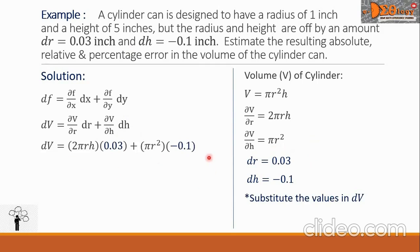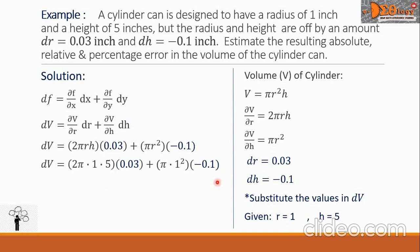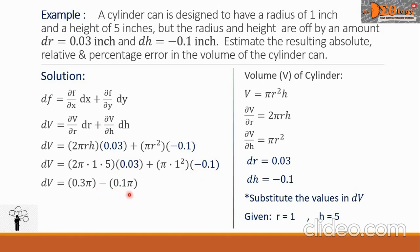Evaluating: the partial derivative of V with respect to r is 2πrh, and with respect to h is πr². Substituting r equals 1, h equals 5, dr equals 0.03, and dh equals negative 0.1: we get 2π times 1 times 5 times 0.03, which gives 0.3π, minus π times 1 squared times 0.1, giving negative 0.1π. The difference dV equals 0.2π cubic inches.